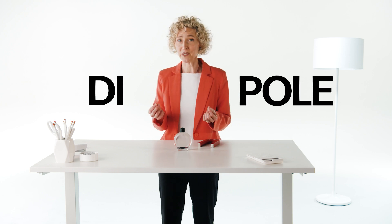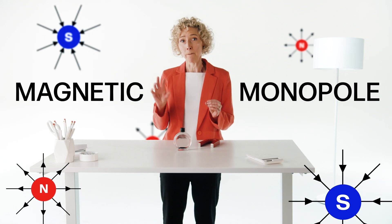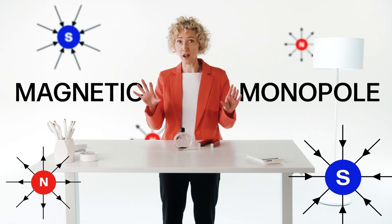Two poles make what's called a dipole. But physicists have long theorized that there could be, out there in the universe, some fundamental particle that is a north pole all by itself, or a south pole all by itself. And these would be called magnetic monopoles. Monopole meaning one pole.